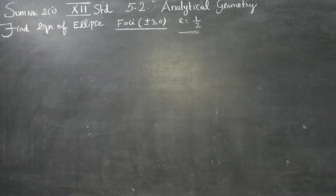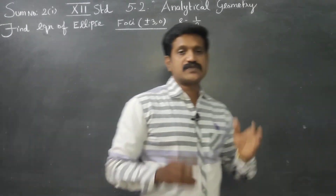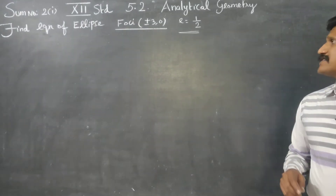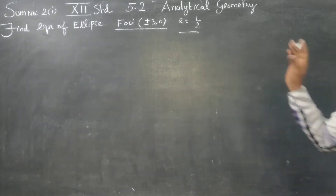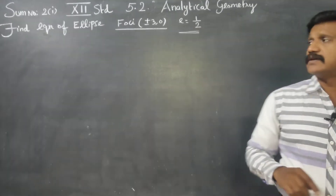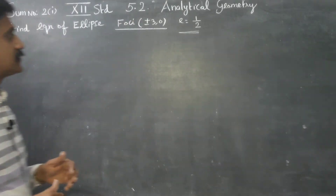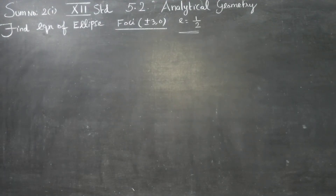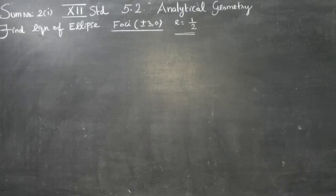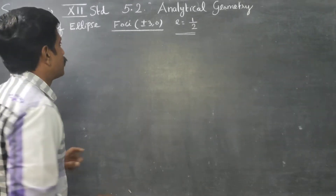Find the equation of ellipse. I am having only two pieces of information: one is foci, that is plus or minus 3 comma 0, and another information is e is equal to 1 by 2. First I am going to fix my focus in a rough diagram. After fixing the focus, we can confirm whether this ellipse is a vertical ellipse or a horizontal ellipse.